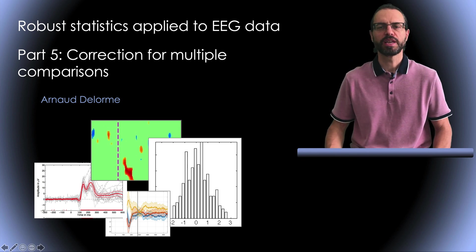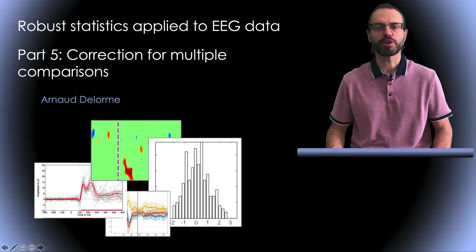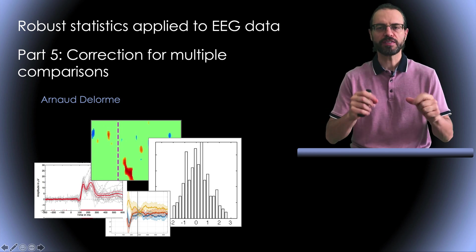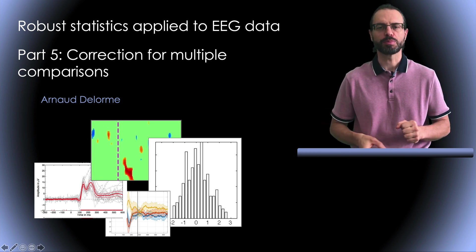Hello, my name is Donald DeLorme, and this is a series of videos on robust statistics applied to EEG data. This is part 5, which is about correction for multiple comparisons.